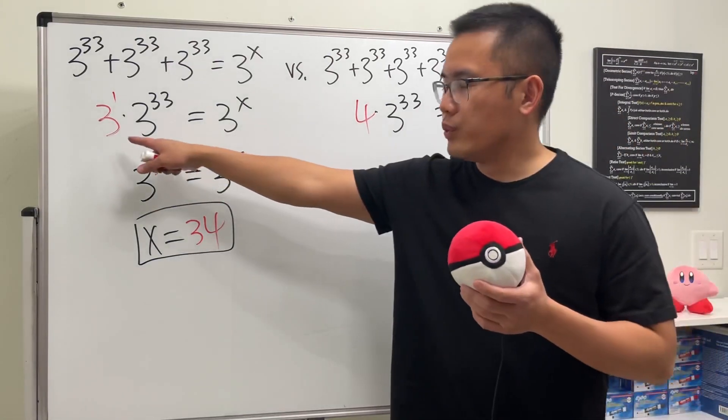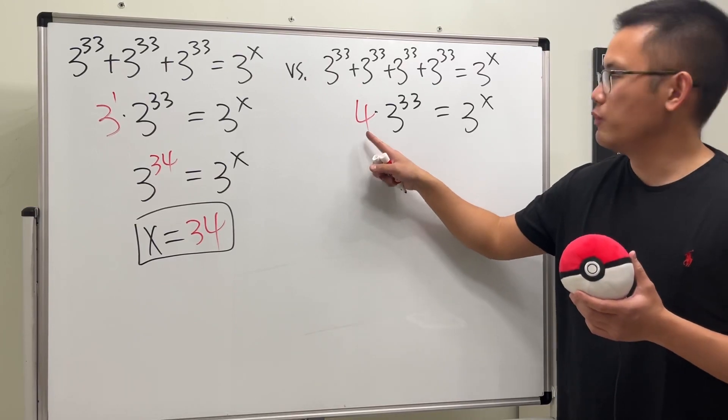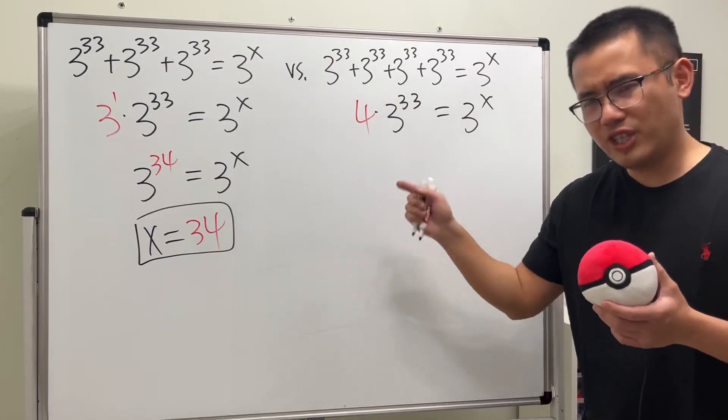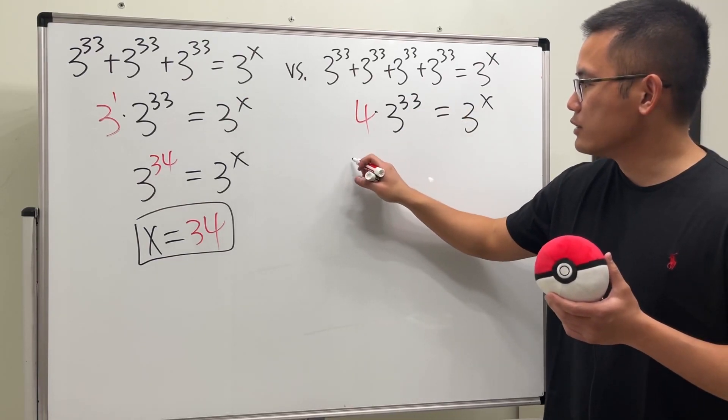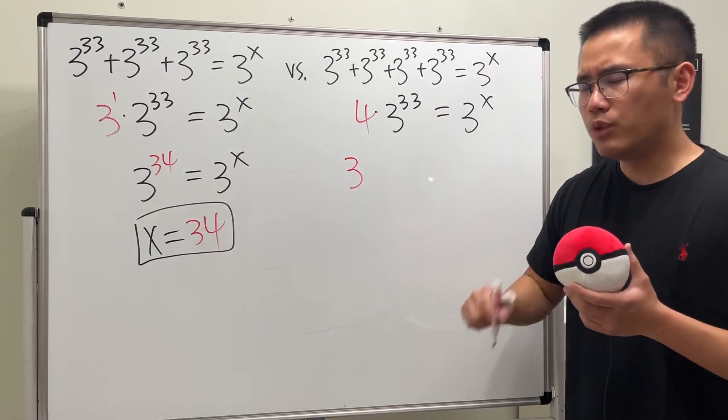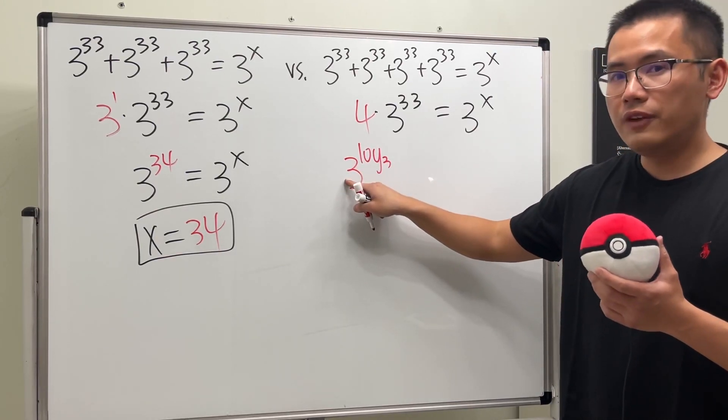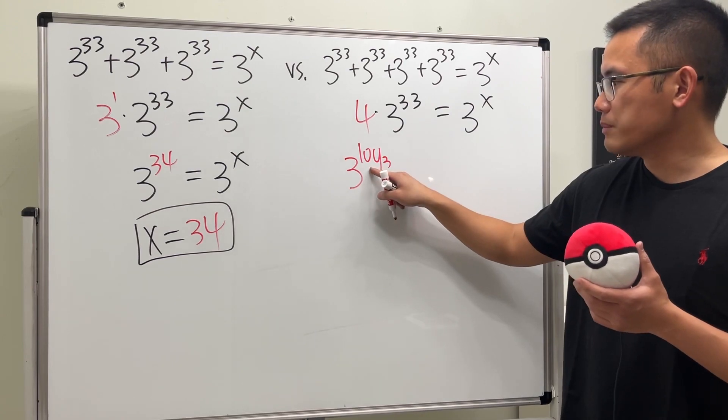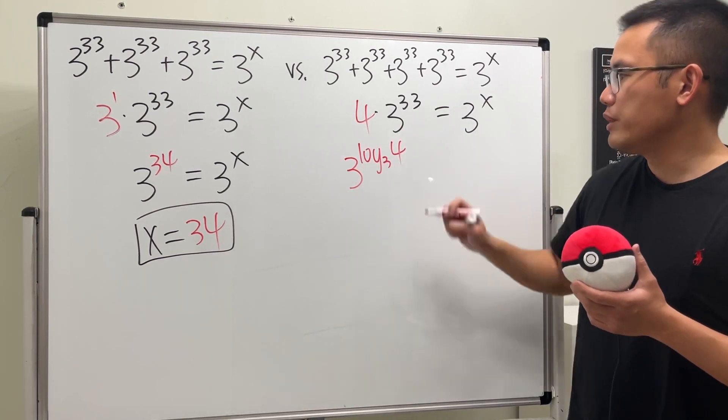Ideally, we want to have the same base. This is base 4, 4 to the first power—no good. Check this out: I'm going to purposely rewrite this 4 as 3 to some power. We can do so by putting down log base 3, because if the base for the exponential and the base of the logarithm match, you can cancel. Of course, you want it to equal 4, so the input here is 4.